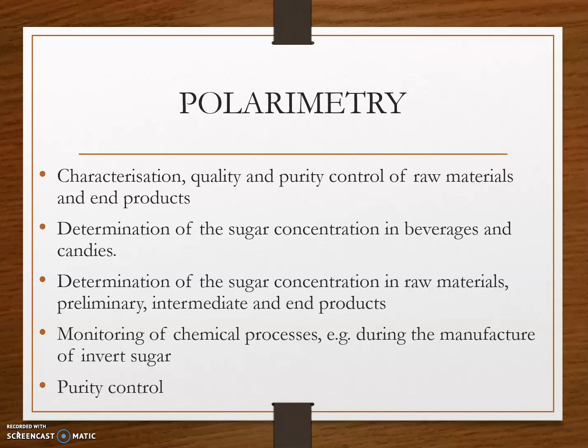Polarimetry can be applied for characterization, quality, and purity control of raw materials and end products, determination of sugar concentration in beverages and candies, determination of sugar concentration in raw materials, intermediate, and end products, monitoring of chemical processes such as during the manufacture of invert sugar, and as a purity control check.